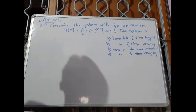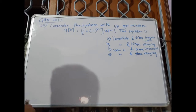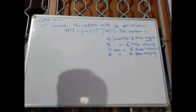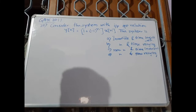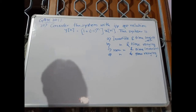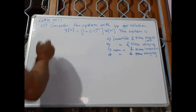This is problem number 20 of GATE 2017. Consider the system with input-output relation y[n] = (1 + (-1)^n) * x[n]. The options are: (a) invertible and time invariant, (b) invertible and time varying, (c) non-invertible and time invariant, and (d) non-invertible and time varying.